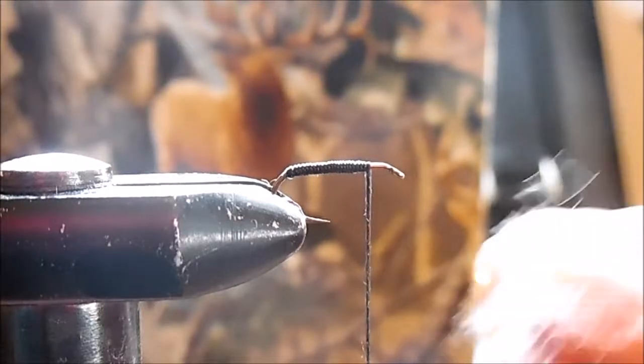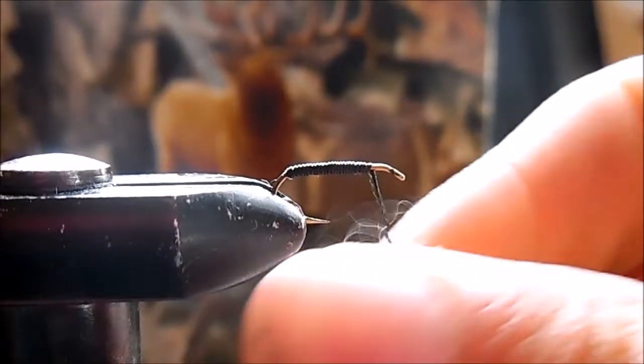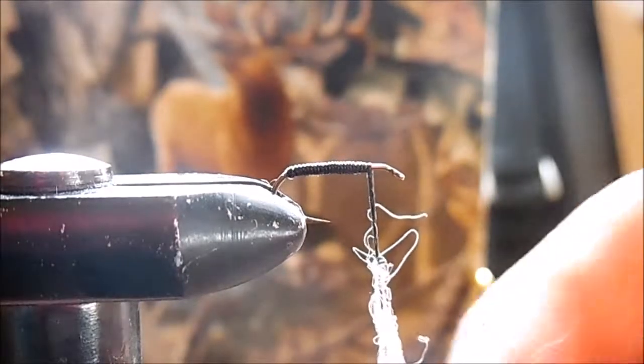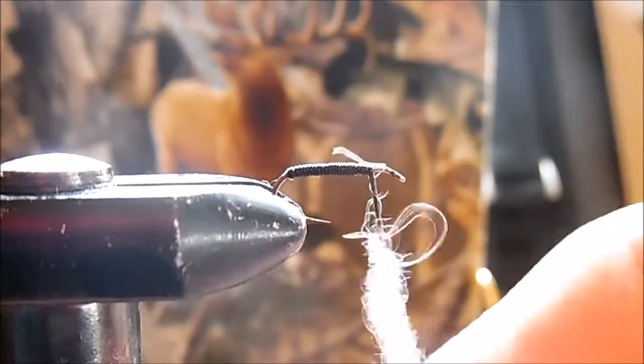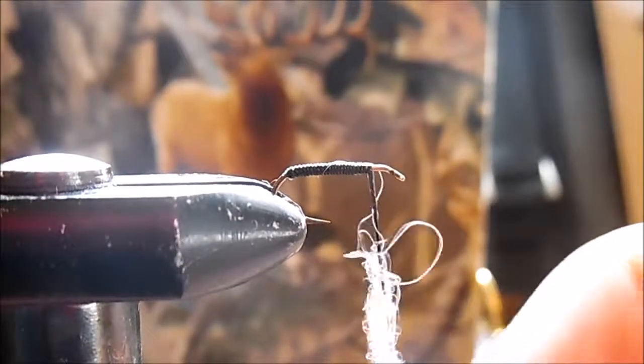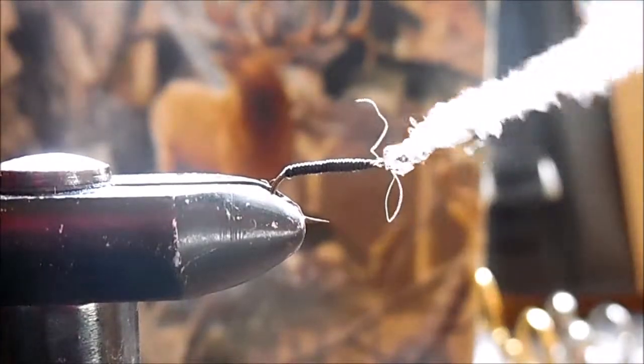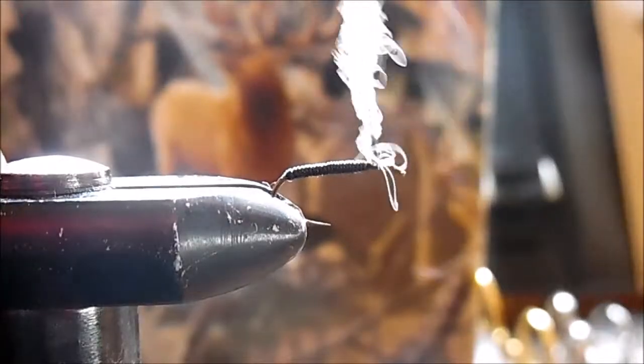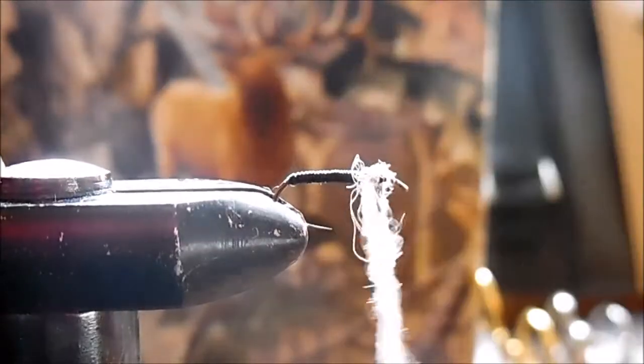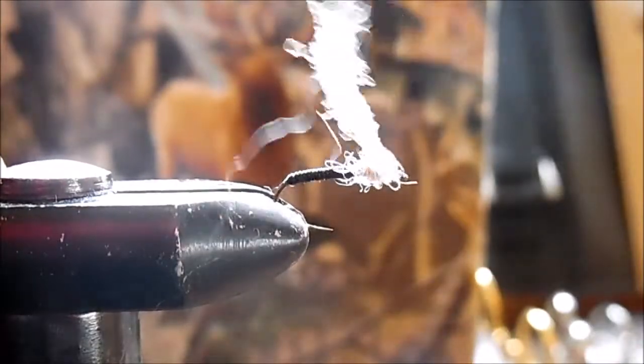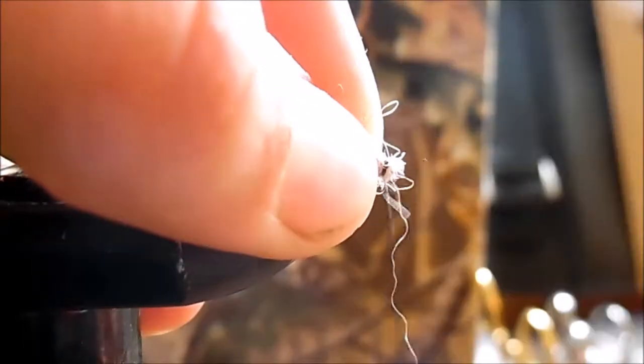Just take some of it, just do a dubbing rope here, just start wrapping it to create a nice little bushy head.